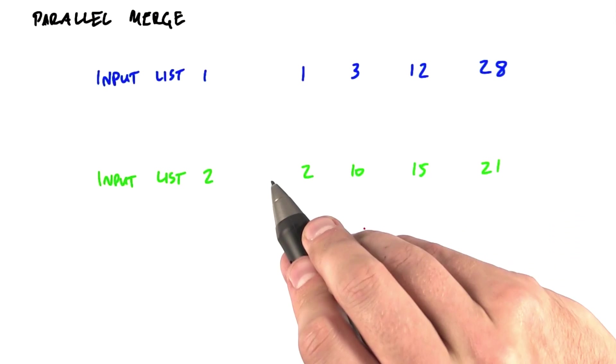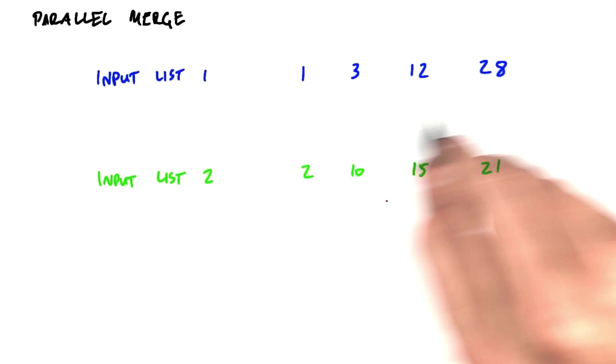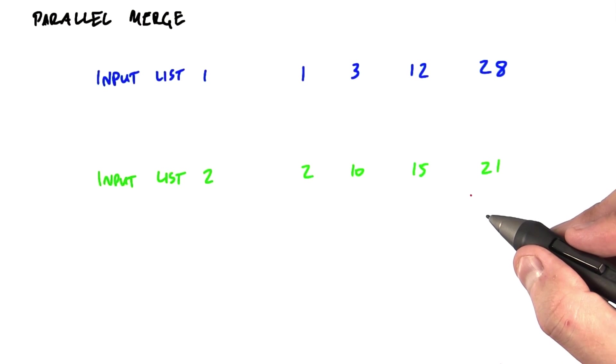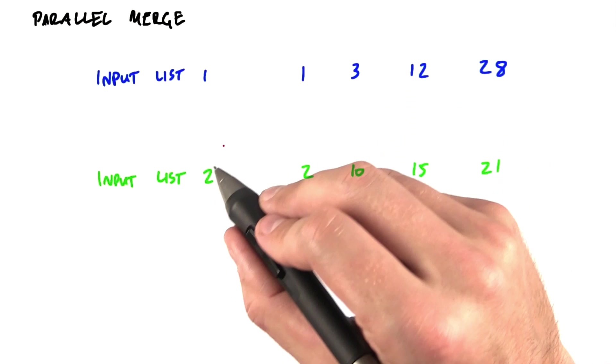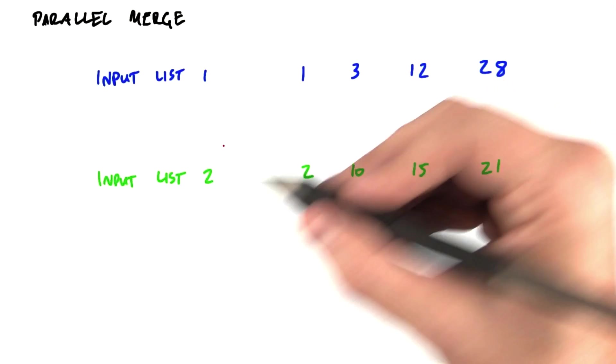Mentally, we're going to think about assigning one thread per input element in each of the two sorted lists. So in this example, we're going to merge two sorted sequences of four elements each. So we would launch eight threads,